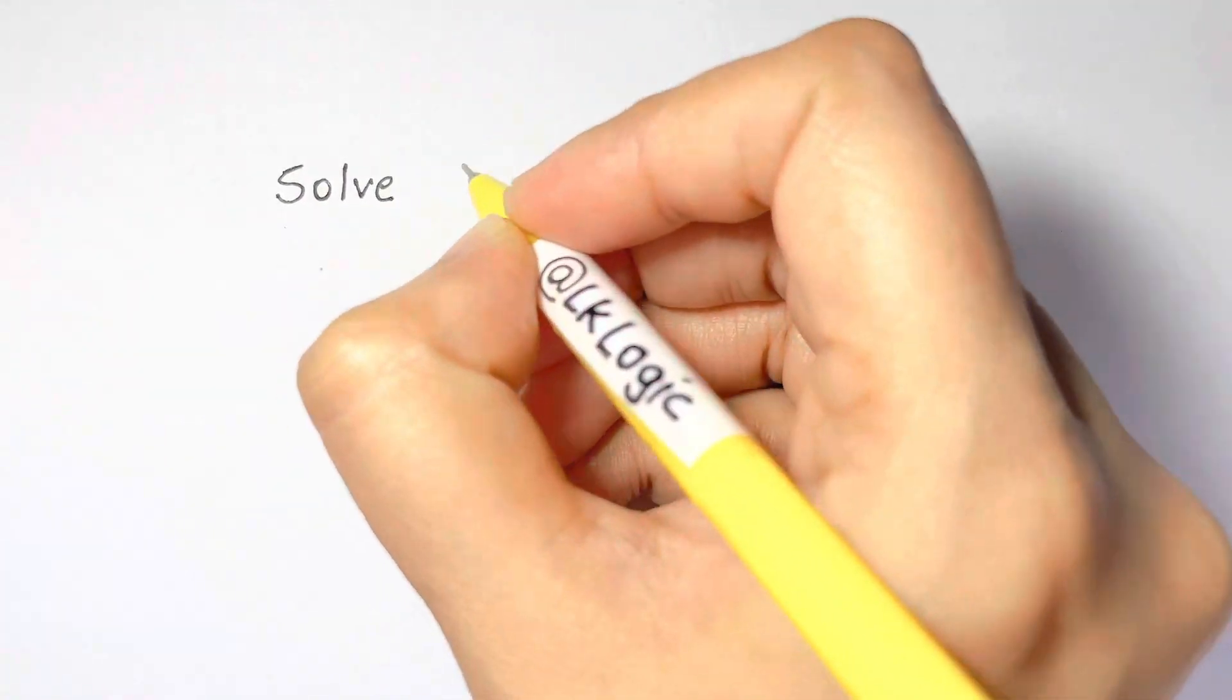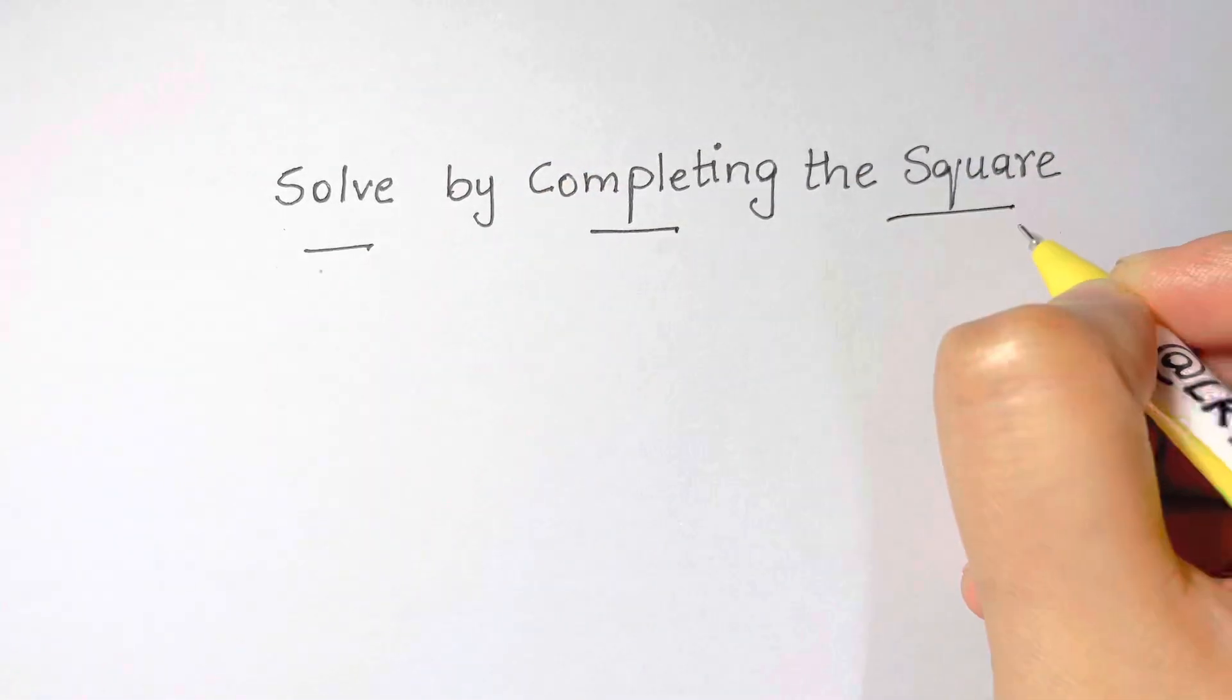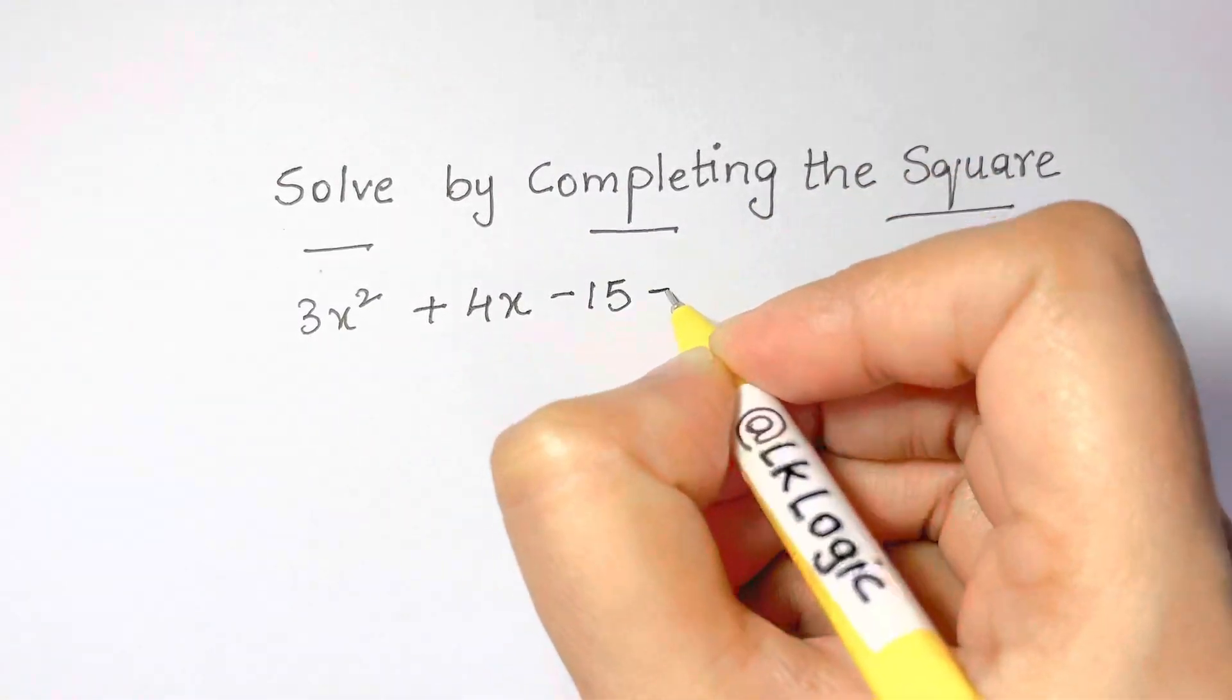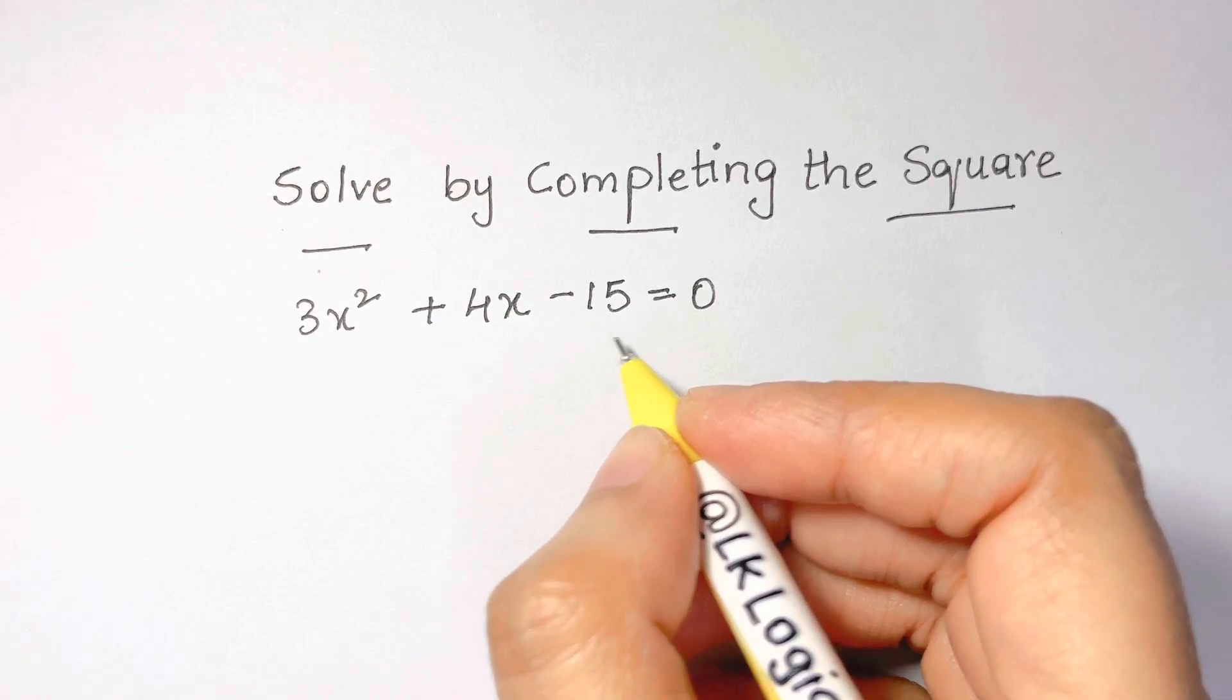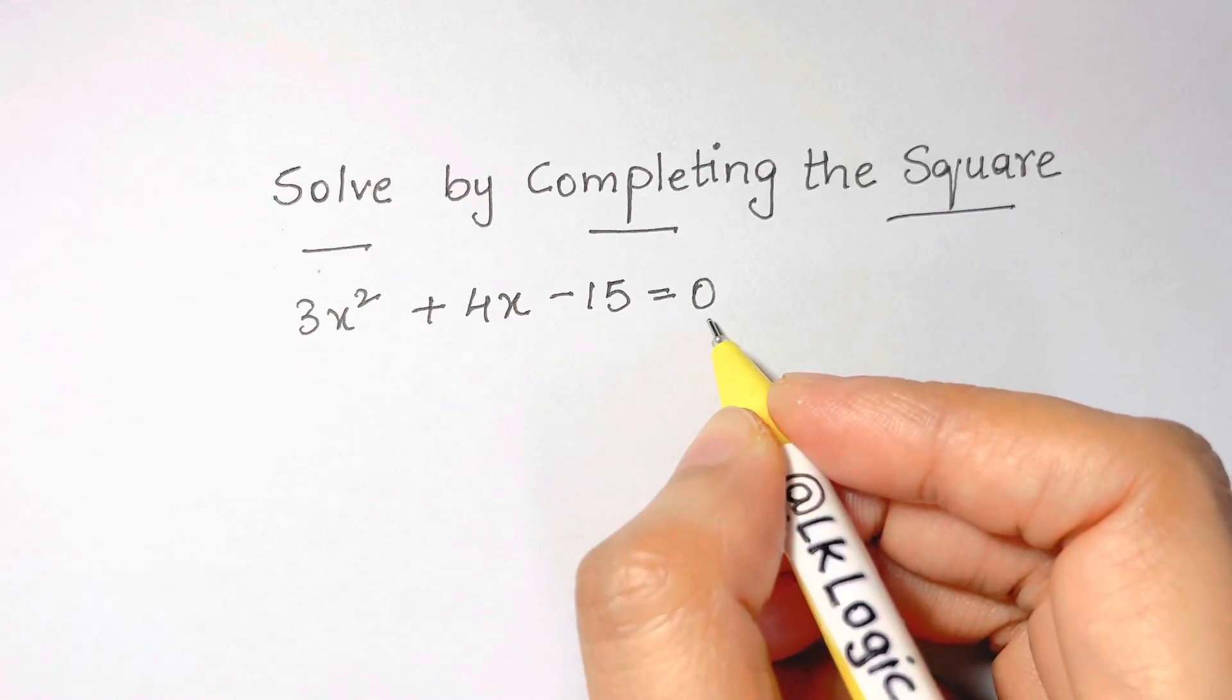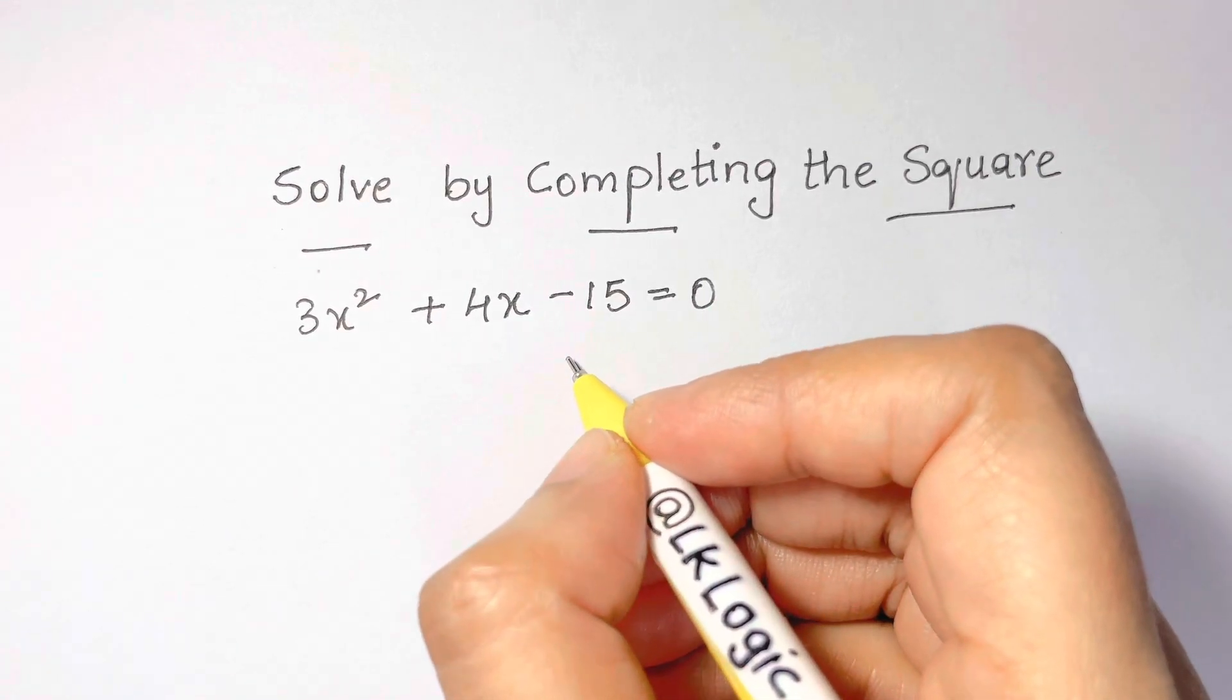In this video I'm going to show you how to solve this quadratic equation by completing the square method. The very first thing we're going to do is make sure that only x variables are on the left hand side and we must get rid of this negative 15.